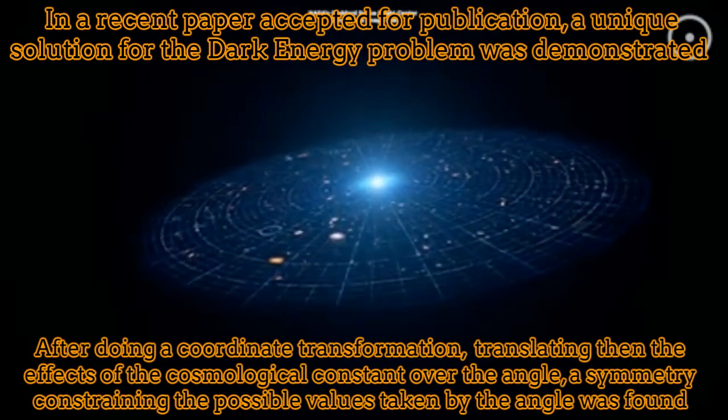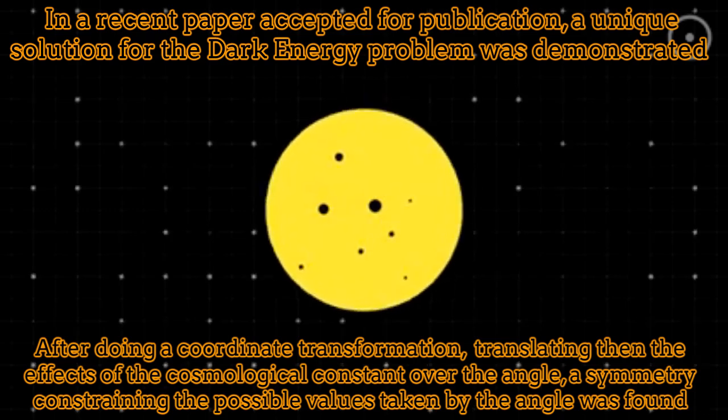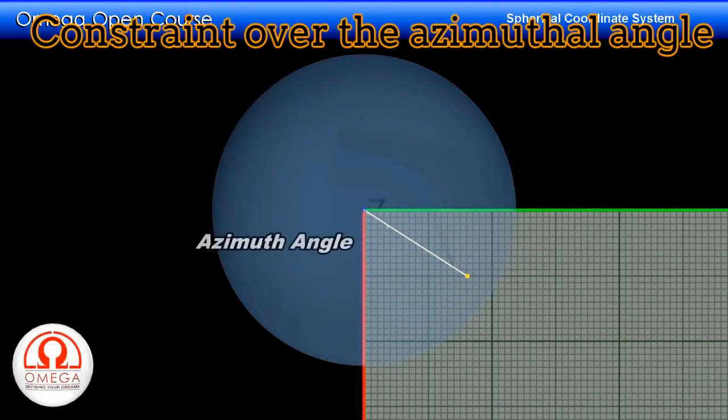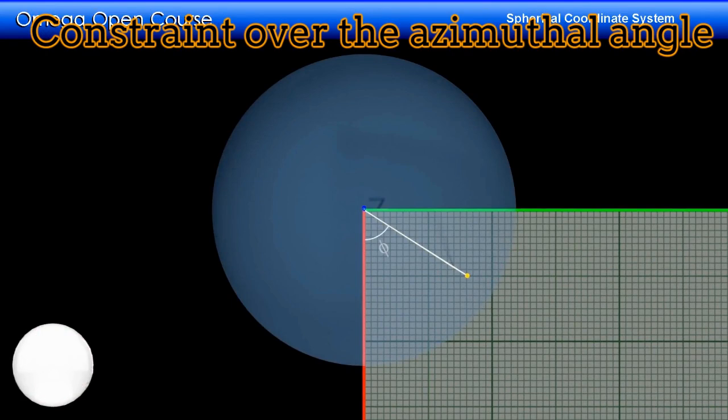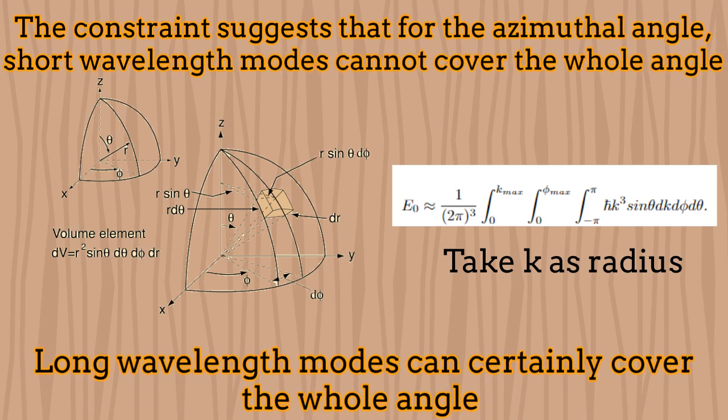In a recent paper accepted for publication in a refereeing journal, the solution to the problem of dark energy was found. It was found that after a coordinate transformation, it is possible to concentrate all the cosmological constant effects over the angular components. In such a case, after imposing the symmetry, a natural constraint over the azimuthal angle emerges. The constraint over the azimuthal angle suggests that the short-wavelength modes cannot cover the whole angle, while the long-wavelength modes certainly can. This certainly suppresses several modes over the calculation.